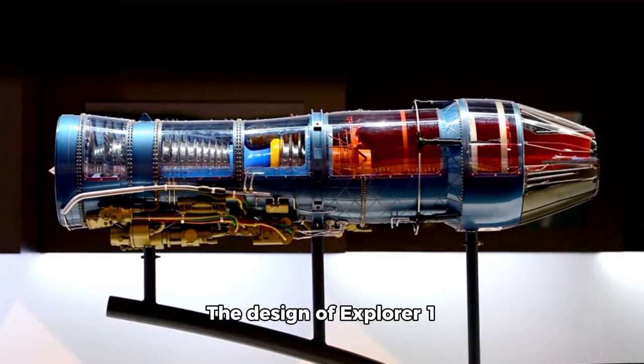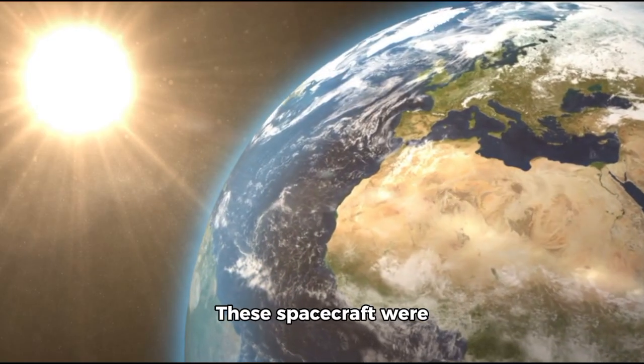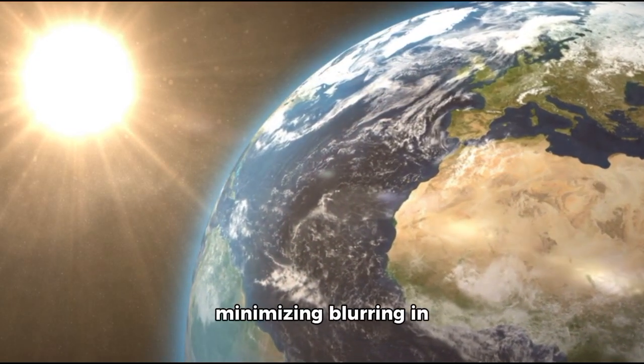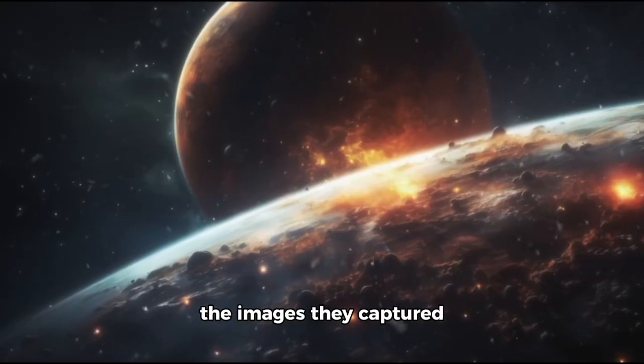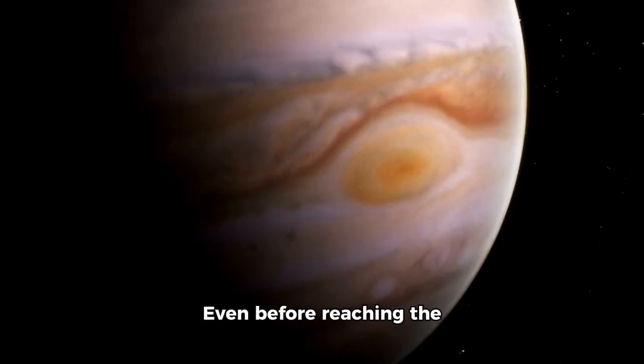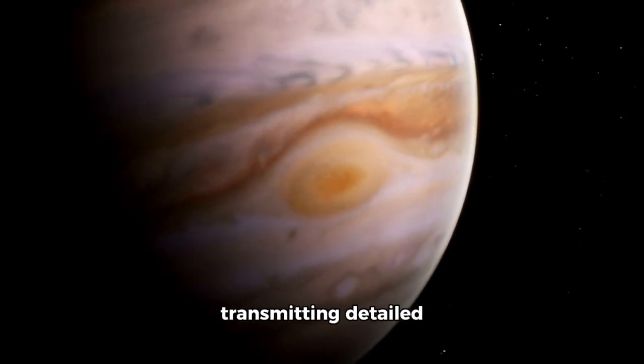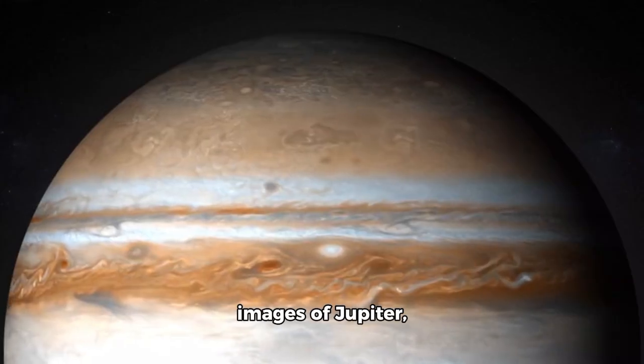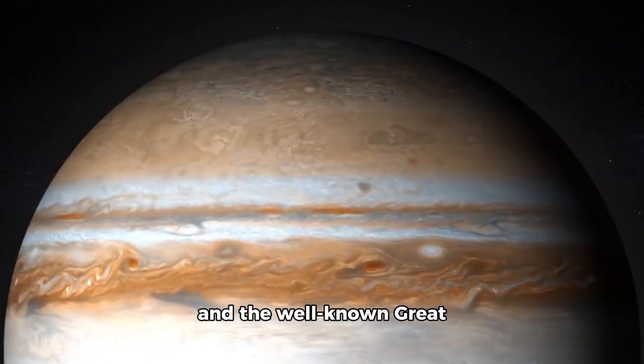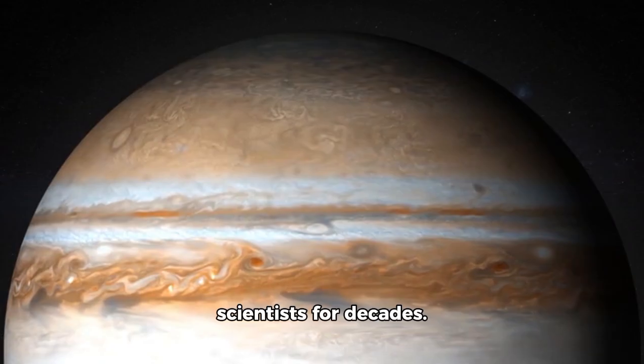The design of Explorer 1 and Explorer 2 reflected cutting-edge engineering. These spacecraft were built to rotate slowly, minimizing blurring in the images they captured as they traversed space and time. Even before reaching the outer planets, the spacecraft began transmitting detailed images of Jupiter, revealing its wavy clouds and the well-known Great Red Spot, a massive storm that has fascinated scientists for decades.